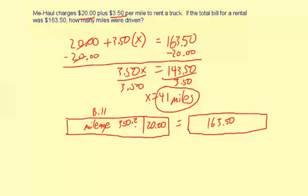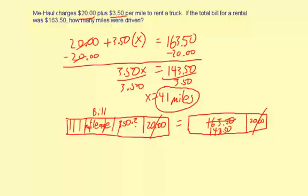We want to figure out the mileage cost plus the original $20 to equal $163.50. We know the $20 can be taken from both sides, which changes this number to $143.50. That's the subtraction step in the equation — taking $20 from both sides — leaving us with $143.50 and the mileage part, which is $3.50 times something.